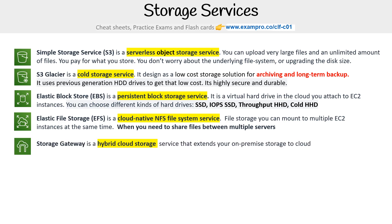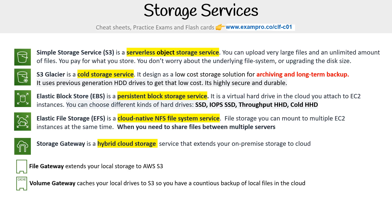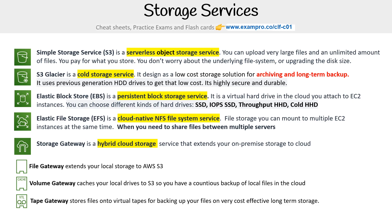We have Storage Gateway, a hybrid cloud storage service that extends your on-premise storage to the cloud. There are three offerings: File Gateway, which extends your local storage to Amazon S3; Volume Gateway, which caches your local drive to S3 for continuous backup of local files in the cloud; and Tape Gateway, which stores files onto virtual tapes for cost-effective long-term storage backup.